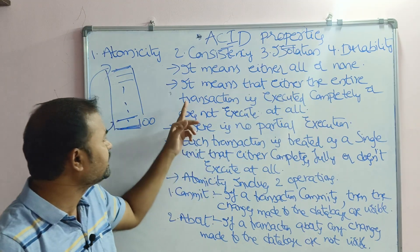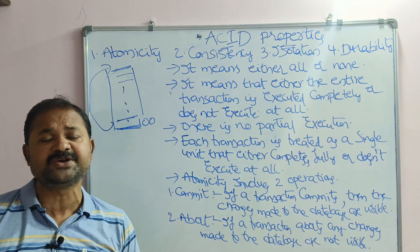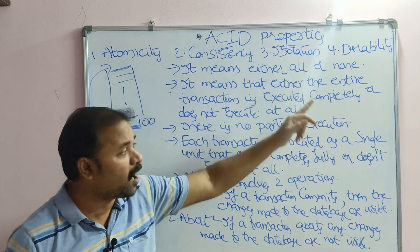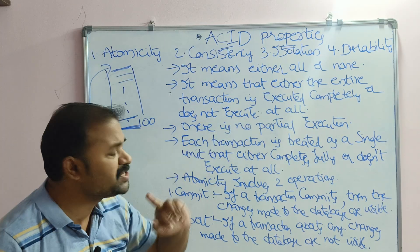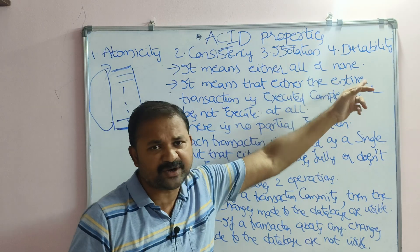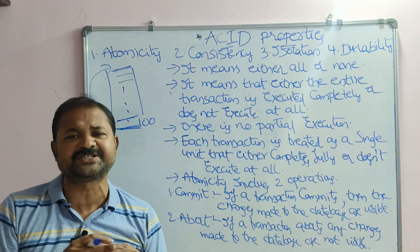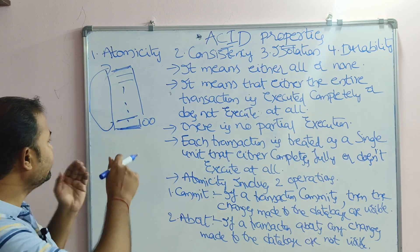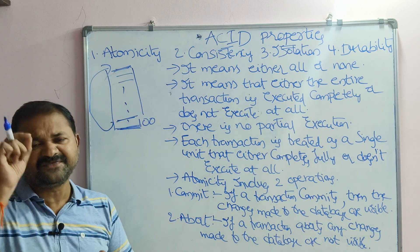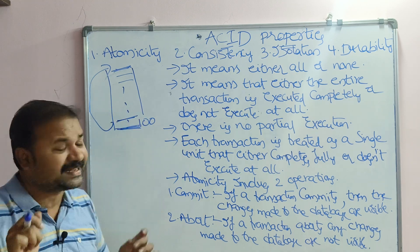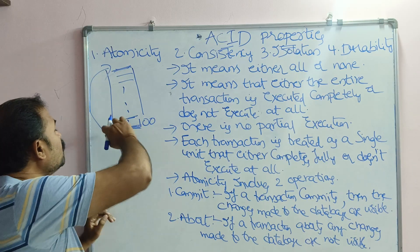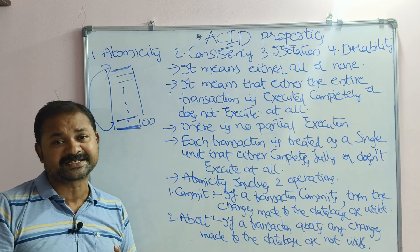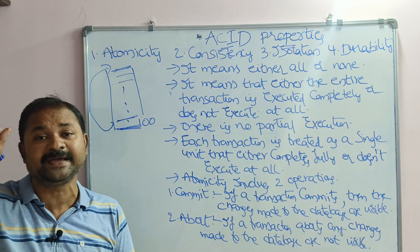It means that either the entire transaction is executed completely, or it does not execute at all — there is no partial execution. If there is any error at any instruction, we have to roll back to the starting instruction. There is no partial execution, and a transaction cannot be resumed.